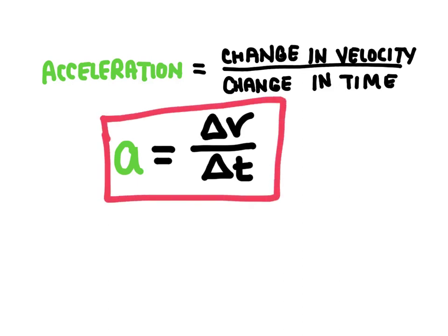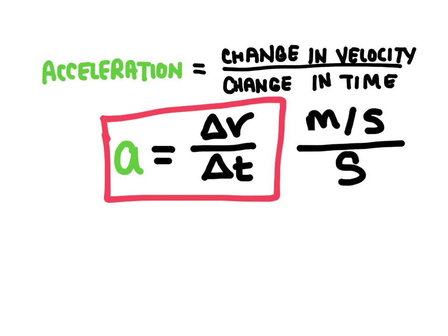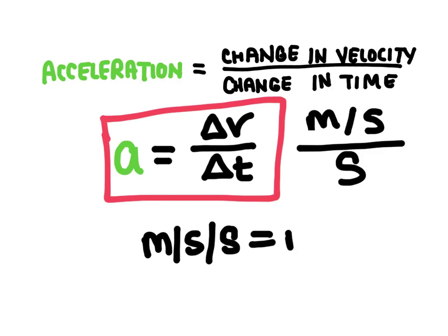The units for acceleration are based on the units for velocity and time. The SI unit for velocity is meters per second, and the SI unit for time is seconds. So the units for acceleration are meters per second per second — or in other words, meters per second squared.